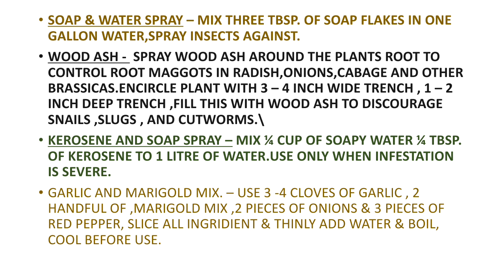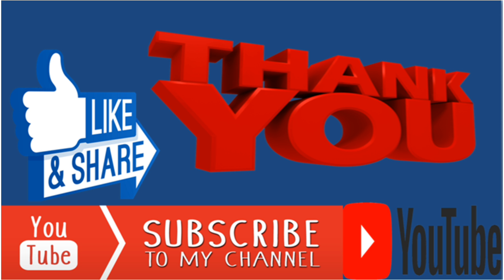For the garlic and marigold mix, use three to four cloves of garlic, two handfuls of marigold, two pieces of onion, and three pieces of red pepper. Slice all of them finely, add to water, boil, let it cool, and spray it on your crop. You will see a miraculous effect — there will be no infestation or pest attack on the cropland.